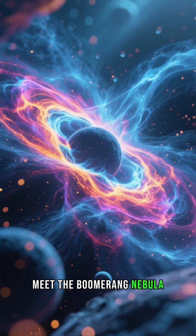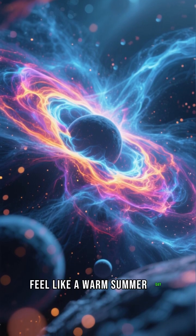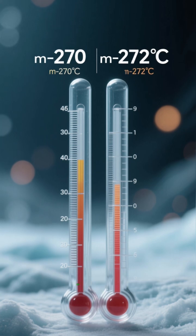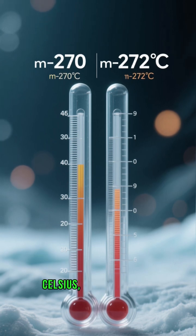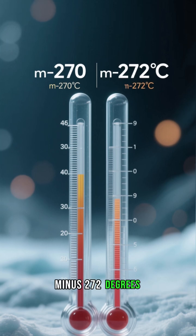Meet the Boomerang Nebula, a place so frigid it makes deep space feel like a warm summer day. While the background temperature of space is a chilly minus 270 degrees Celsius, the Boomerang Nebula plunges to an incredible minus 272 degrees Celsius.